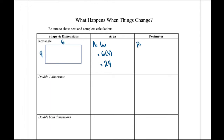So in this case six times four, which equals 24. If we wanted to find the perimeter, perimeter equals two times the length plus two times the width, because they're basically equal on either side. In this case, two times six plus two times four — we get 12 plus 8, which is 20.